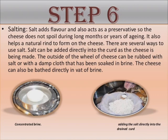The sixth step is salting. Salt adds flavor and also acts as a preservative so the cheese doesn't spoil during long months or years of aging. It also helps a natural rind to form on the cheese. There are several ways to use salt: it can be added directly into the curd as the cheese is being made; the outside of the wheel of cheese can be rubbed with salt or with a damp cloth that has been salted; and the cheese can also be bathed directly in a wet brine.